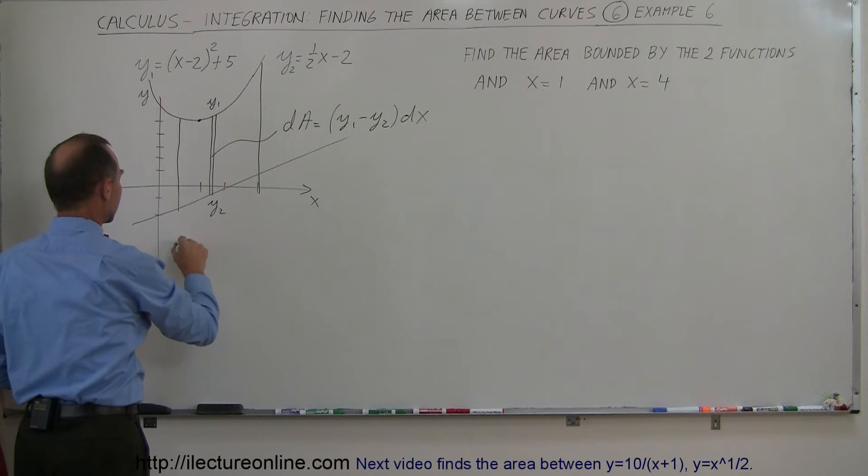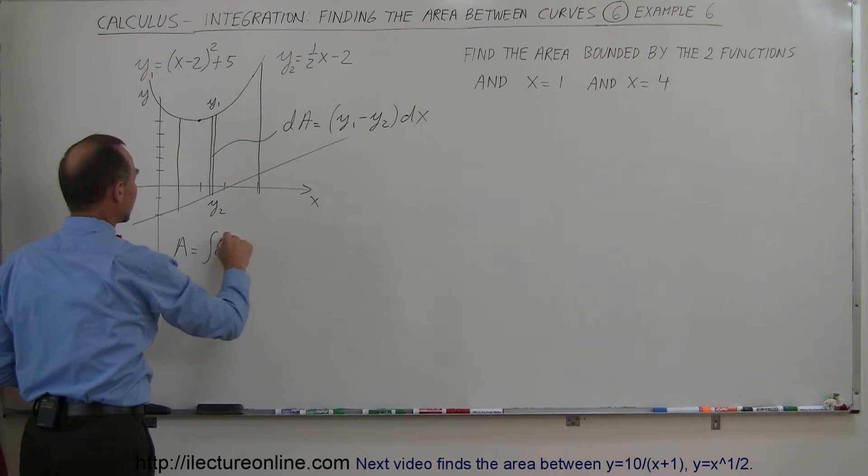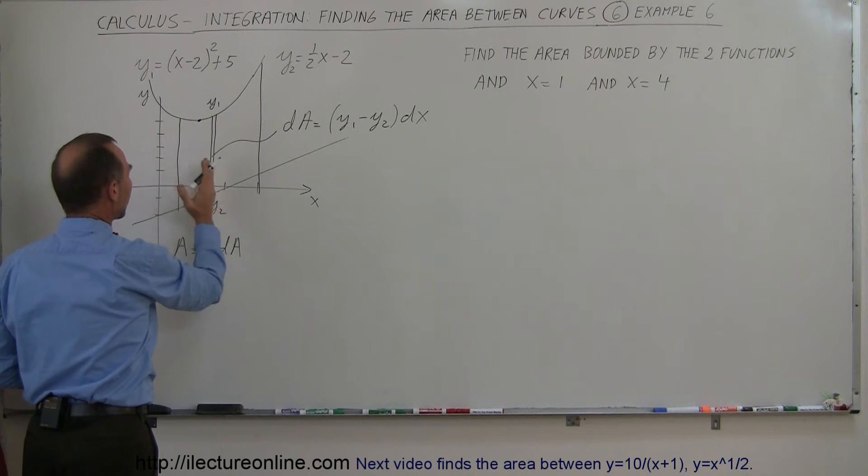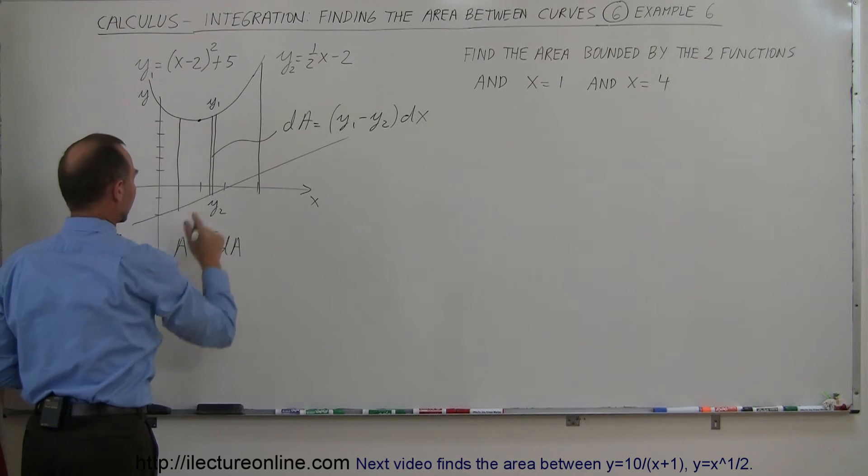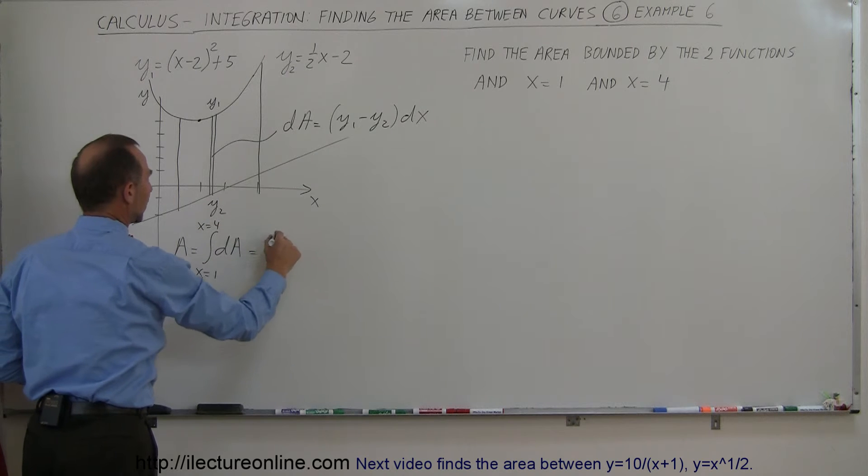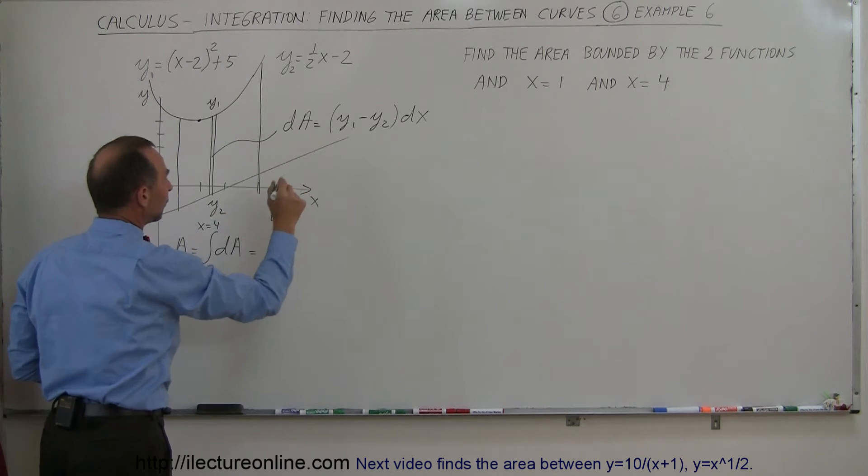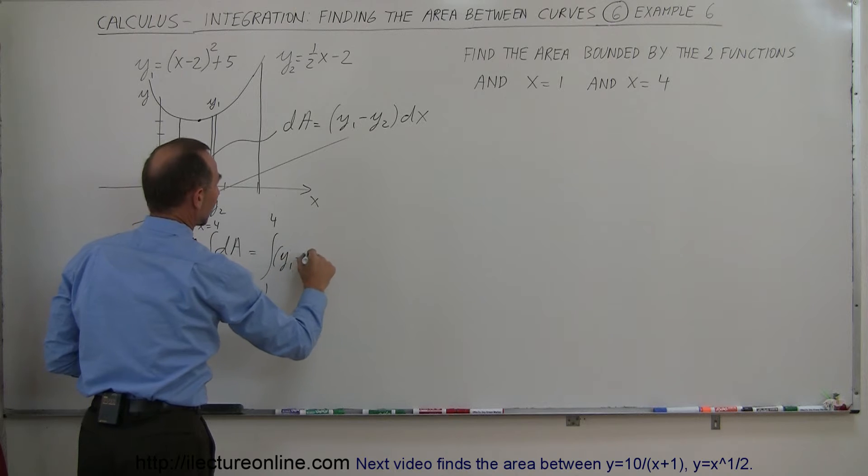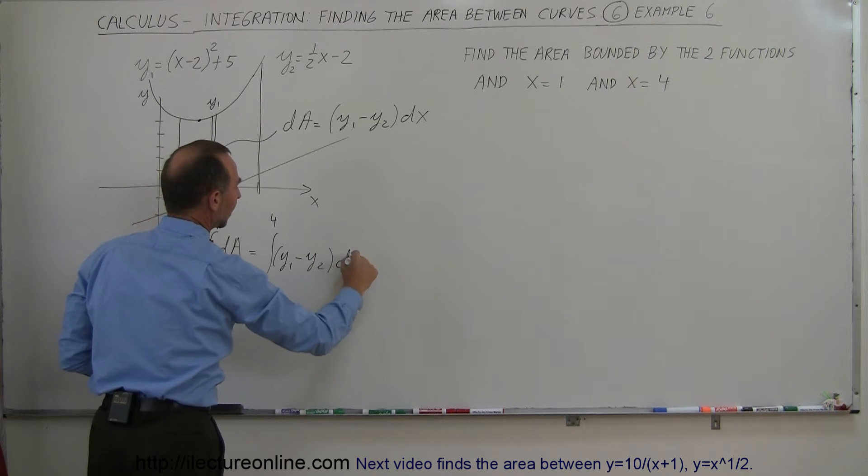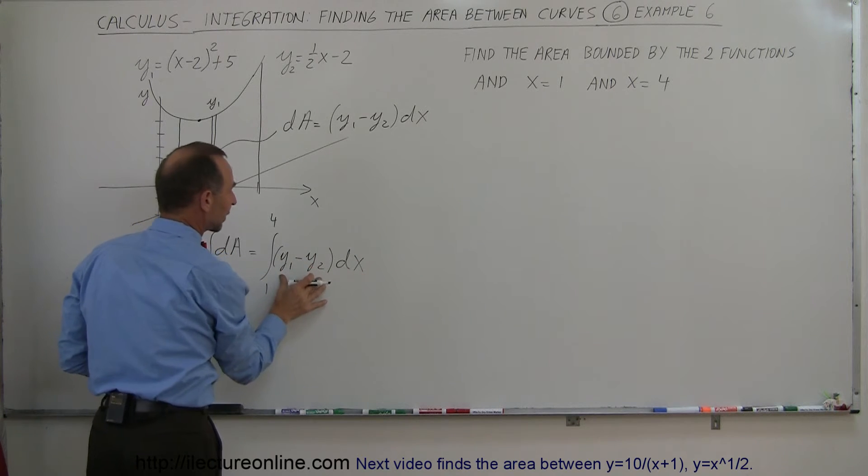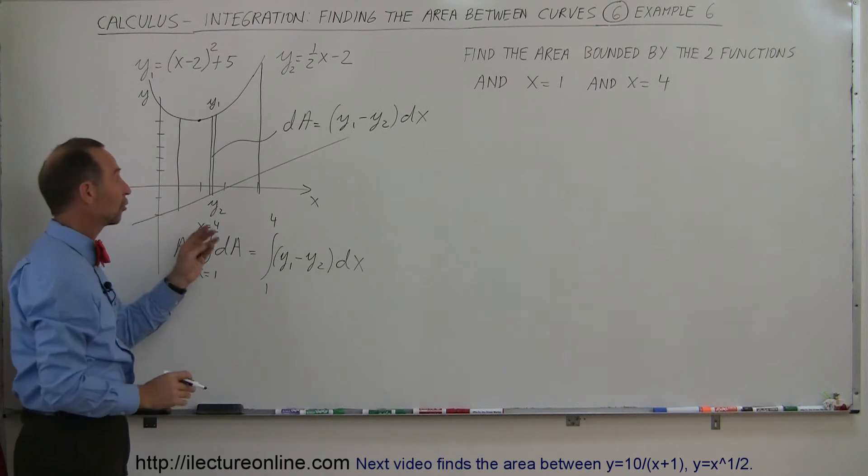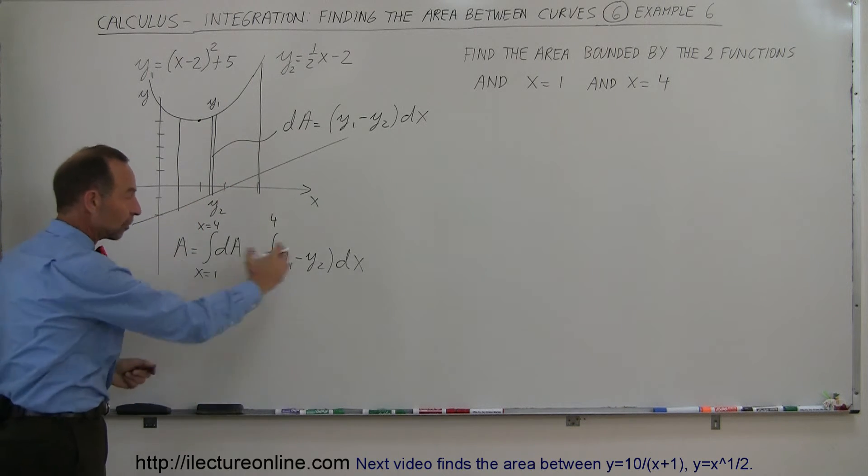That means that the area is equal to the integral of all the dA's. We're going to sum them all up all the way from x equal 1 to x equal 4. So that is equal to the integral from 1 to 4 of (y1 minus y2) times dx. Then we're going to sum them all up. That's what integration means.